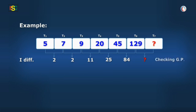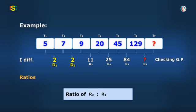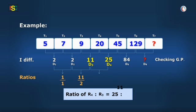And now for GP, ratio of first two terms is 2 is to 2, that is 1 is to 1. Ratio for next two terms is 11 is to 2. After this, ratio for next two terms is 25 is to 11, and ratio of last two terms is 84 is to 25.